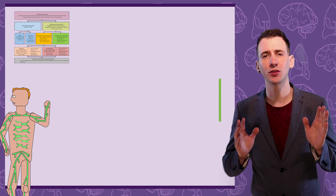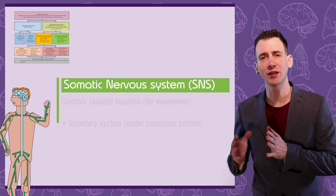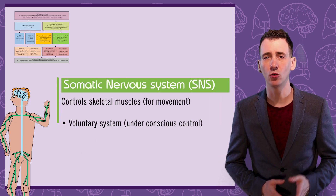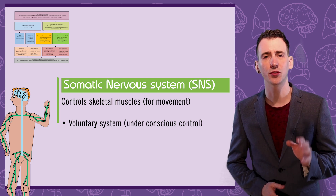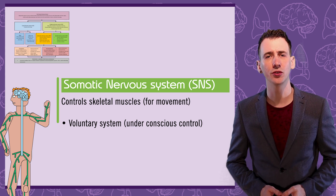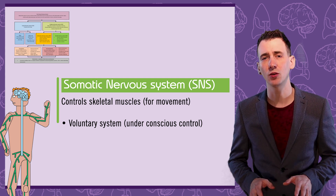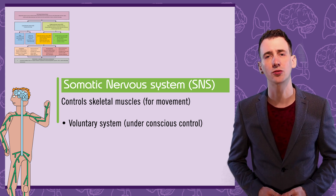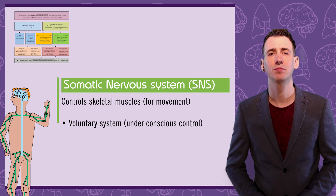The PNS is broken down into two parts. The somatic nervous system, or SNS, which controls your skeletal muscles. This is a voluntary system, meaning it's under conscious control — you decide to move your arm, for example.